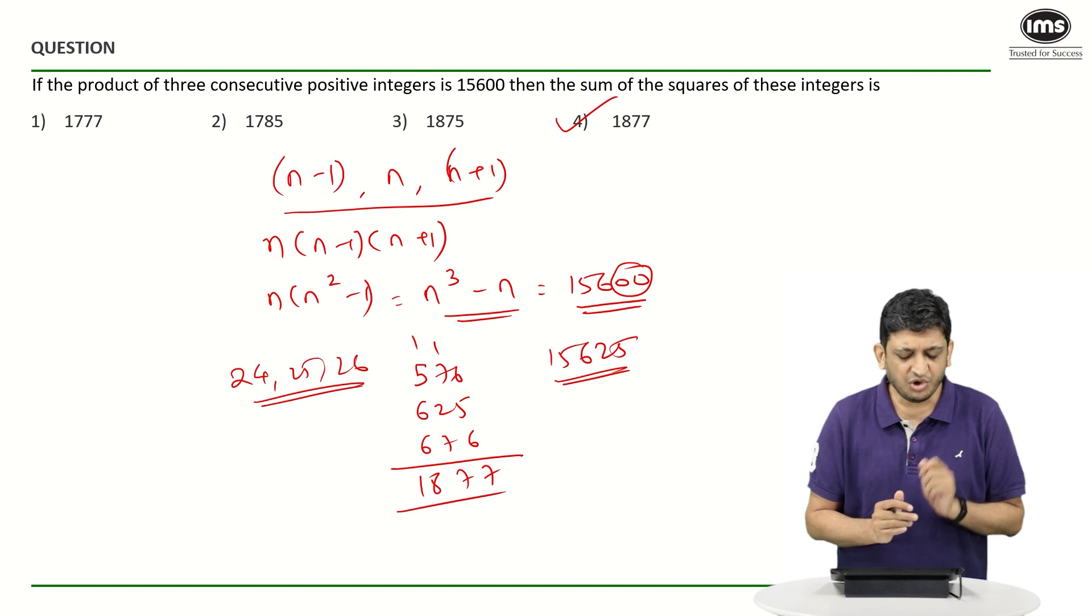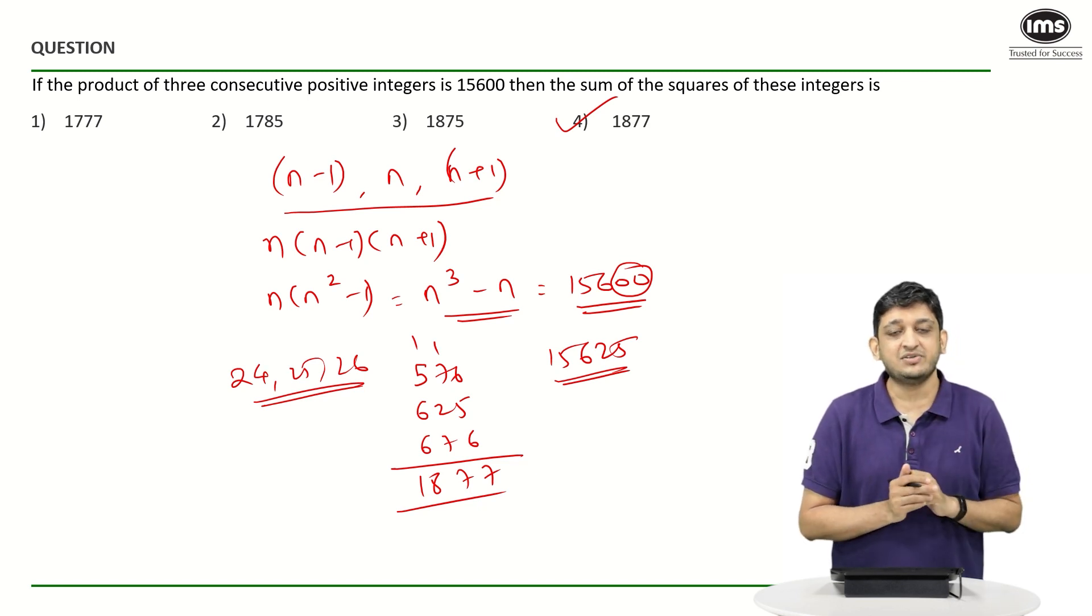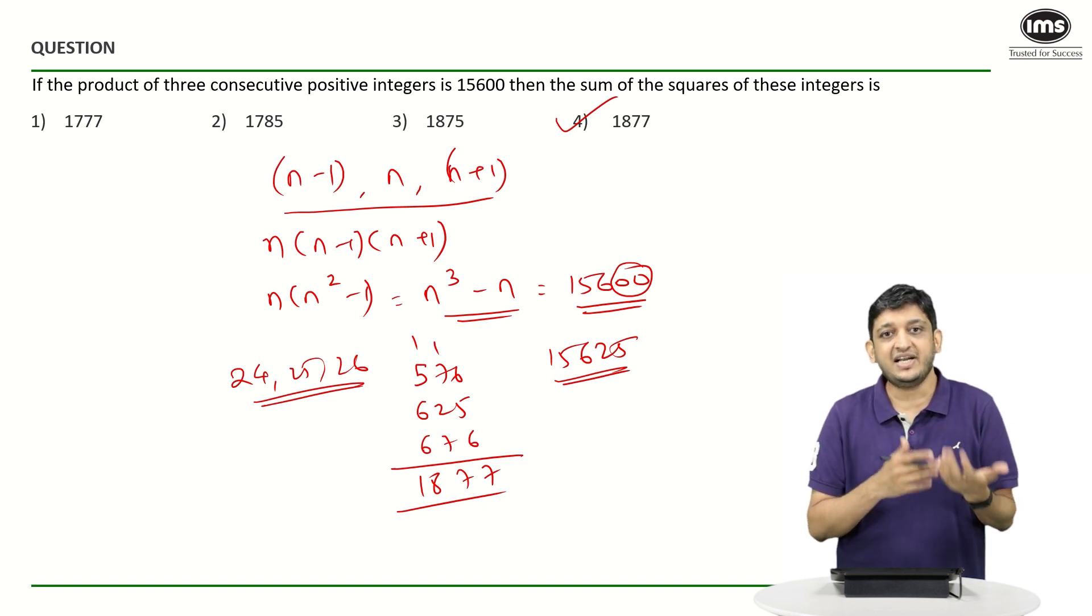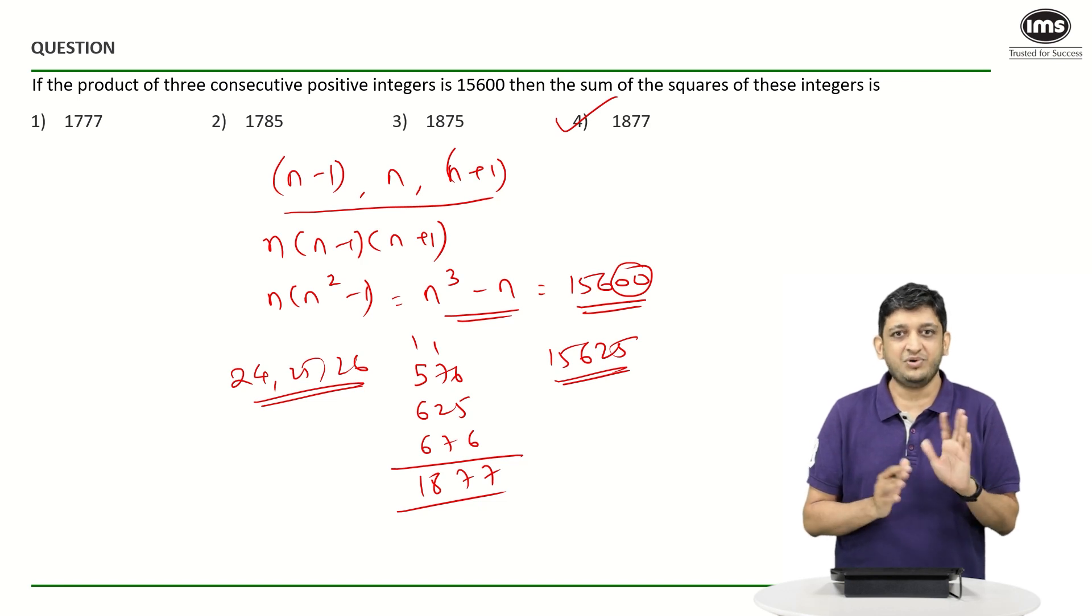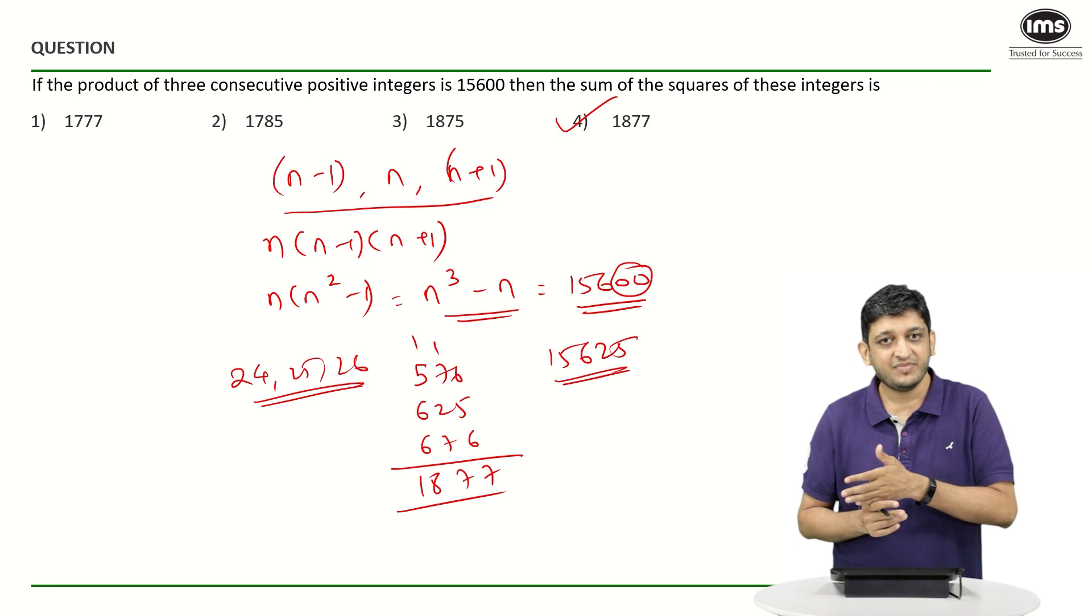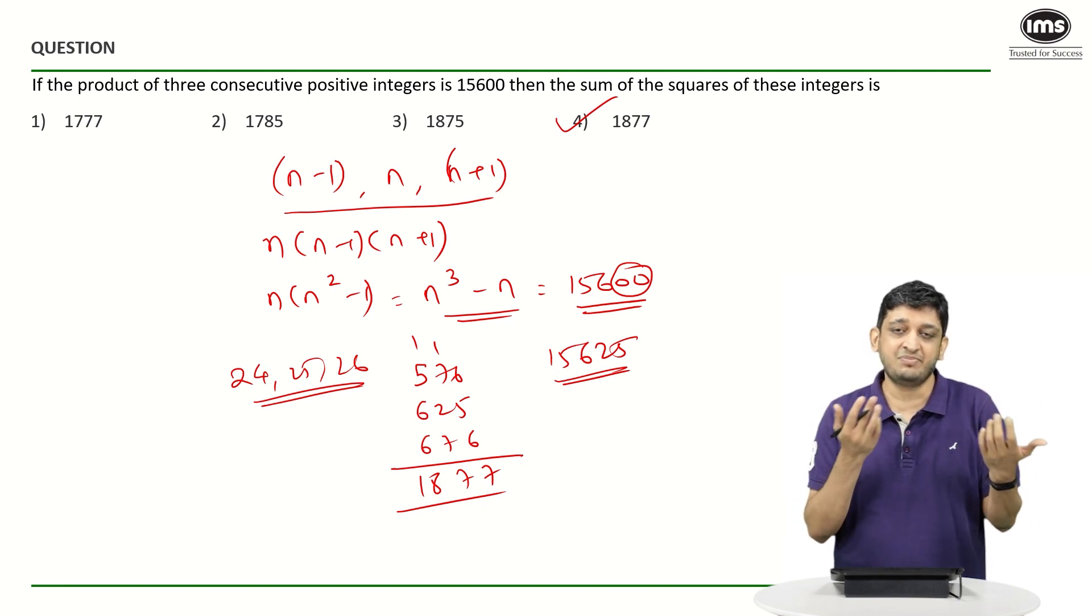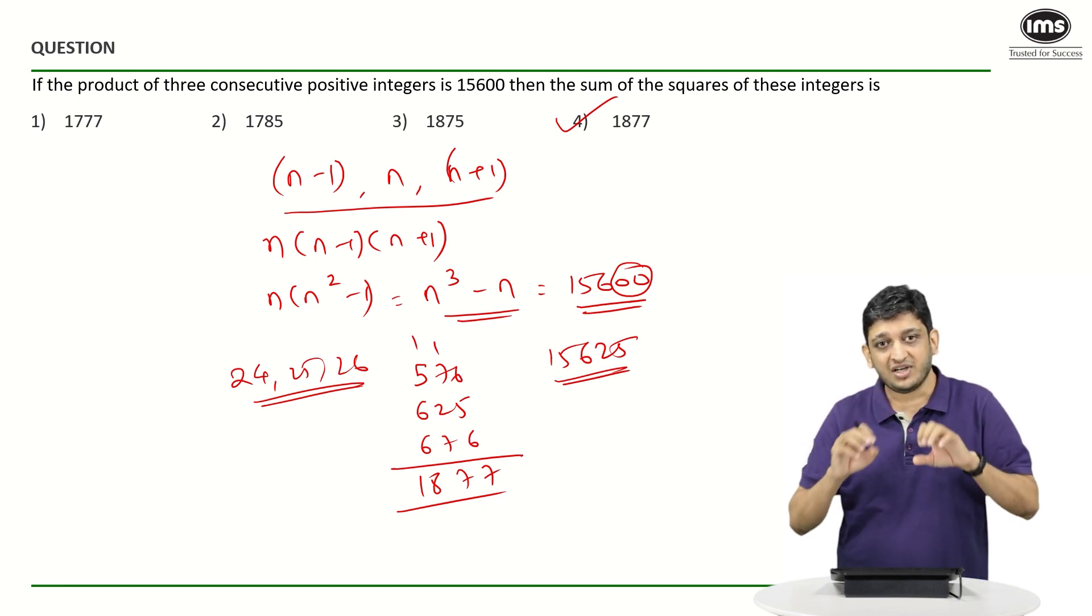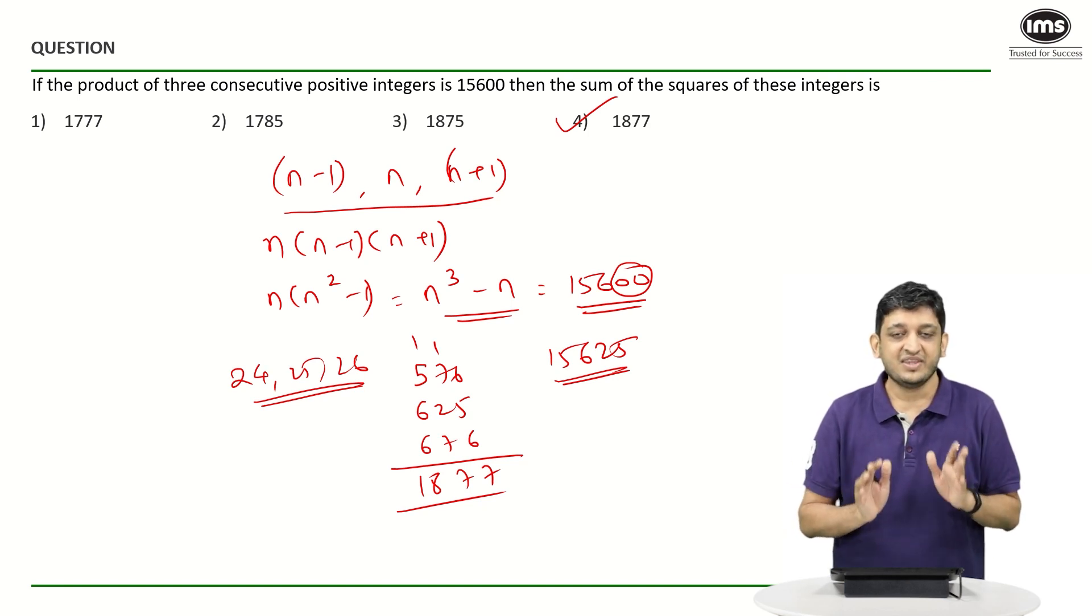What you can also do in this particular case is that you can divide 15600 into its constituent elements and then try to see if you are able to get three consecutive integers. 156, if you are aware of numbers, is going to be 12 into 13 into 100. And then by simple manipulation, 12 and 13 are separated by 1, 24 and 26 are separated by 2. If you pull out a 4 from 100, you are going to be left with a 25.